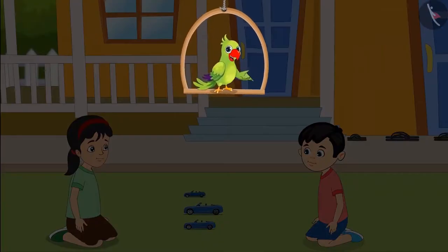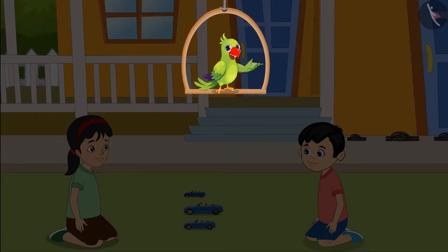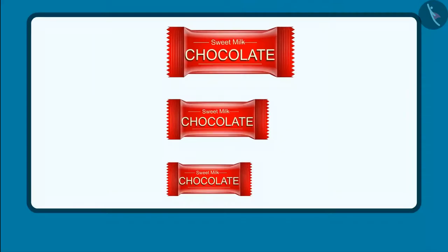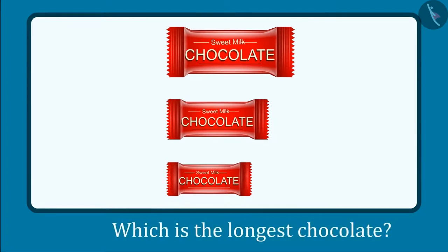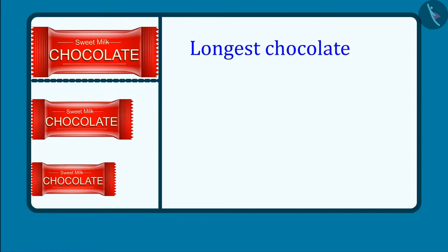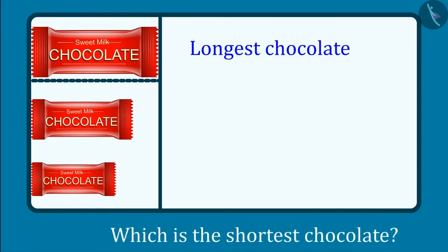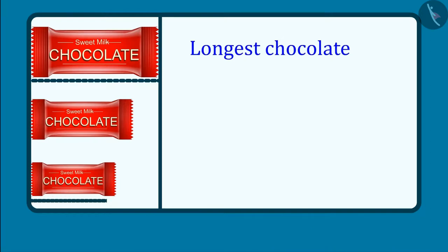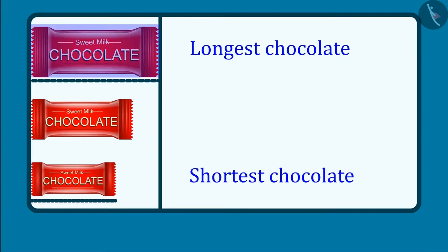So, kids, now you can also identify the longest object and the shortest object out of three objects like Chotu. Come, let's see. These are three chocolates. Can you tell me which is the longest chocolate out of these? Yes, this chocolate is the longest. And which is the shortest chocolate out of these three? Yes, this chocolate is the shortest. This means that out of these three chocolates, this is the longest chocolate and this is the shortest chocolate.